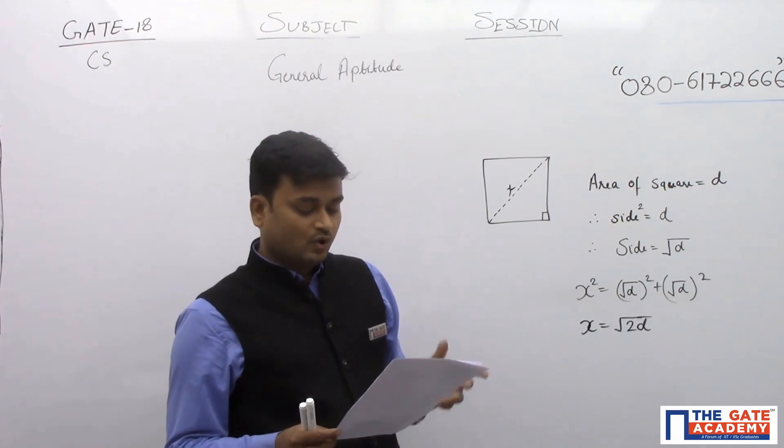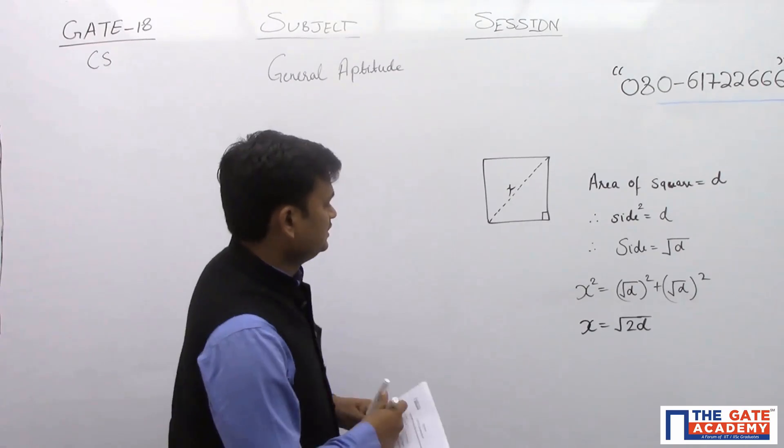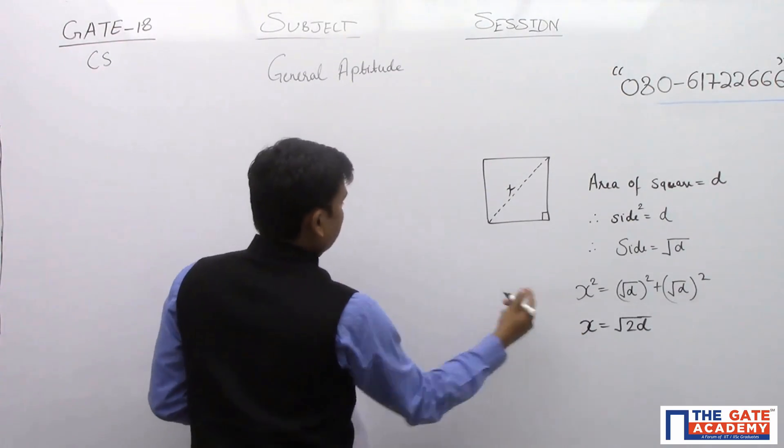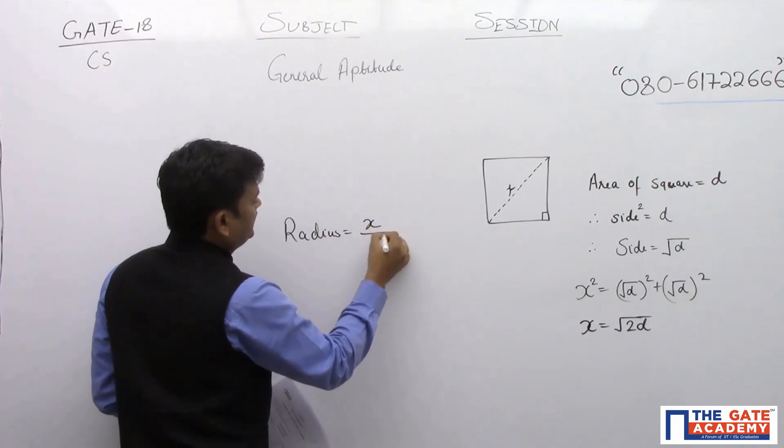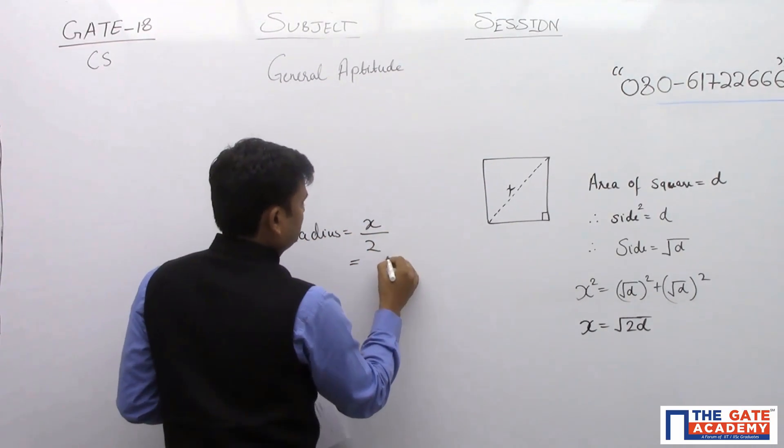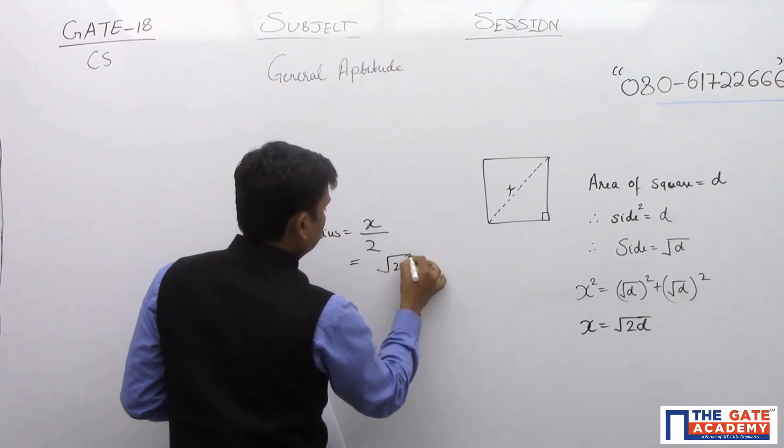So what is the area of the circle? Now you know that if this X is diameter, so radius will be X by 2, which is root 2D by 2.